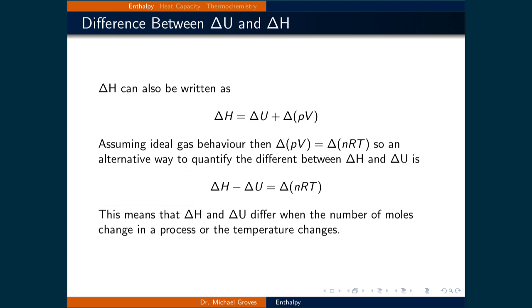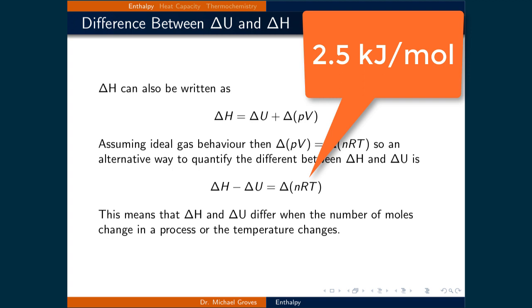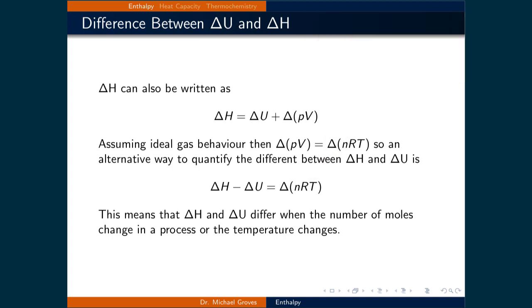For example, the size of NRT for one mole of an ideal gas at 25 degrees Celsius is about 2.5 kilojoules per mole. As we will see in the following example, this difference isn't large, however, it is significant when gases are involved.